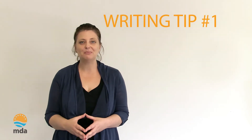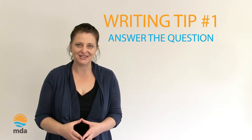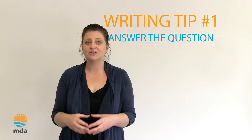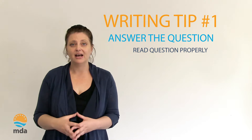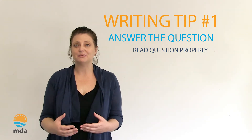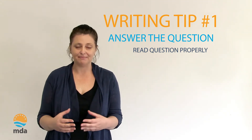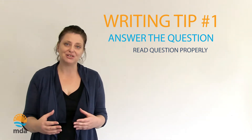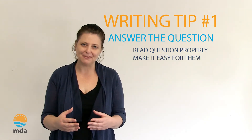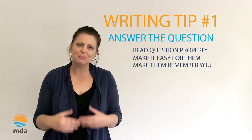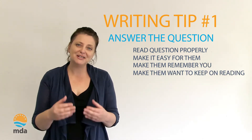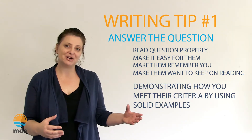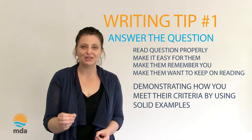Writing tip number one: answer the question. Yes, that may seem a little obvious, but you'd be surprised by the number of applicants who don't read the question properly. This is the number one reason why applications are rejected. Grant makers receive hundreds if not thousands of applications, so make it easy for them, make them remember you, make them want to keep on reading by answering the question they ask of you and demonstrating how you meet their criteria by using solid examples.